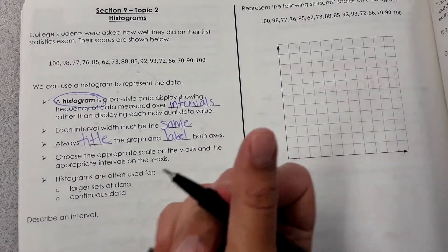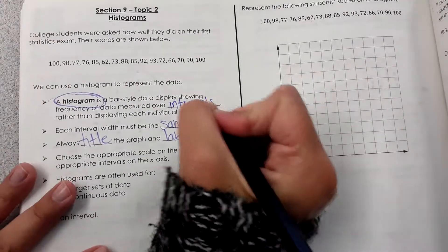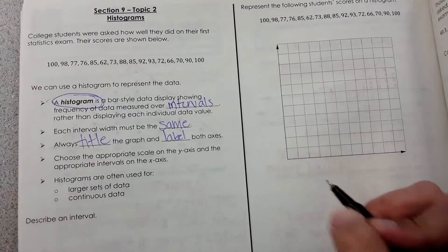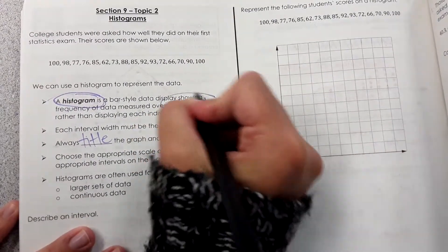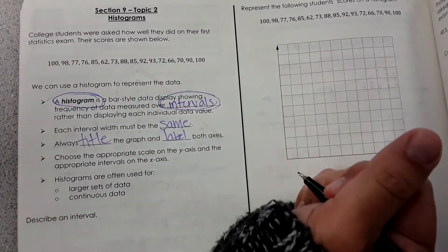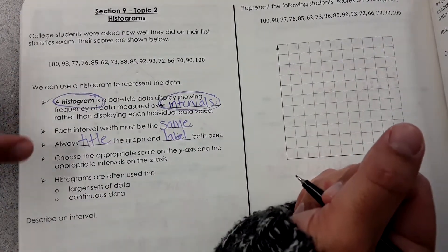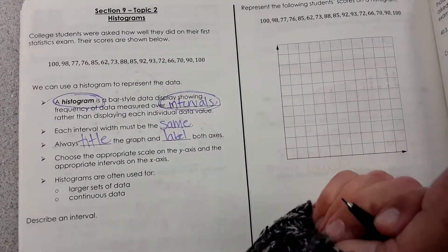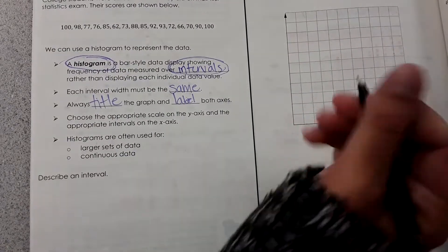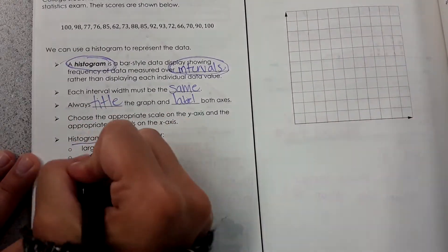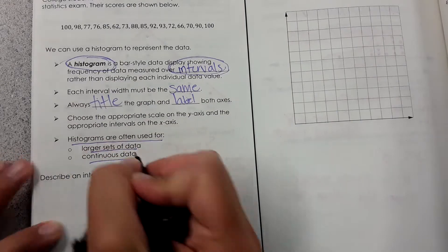Histograms are bar graphs, but instead of using categories for the bars, they use intervals of numbers, and we'll get to what an interval is in a second. Each interval width must be the same, and we'll practice this in a minute. Always title the graph and label both axes as usual. Histograms are often used for larger sets of data and continuous data.